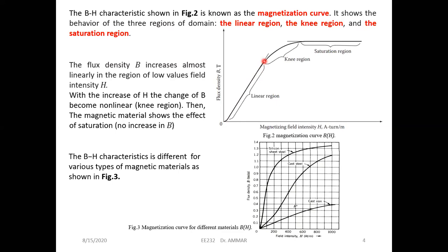In region two, the domains start to be aligned in one direction, so the variation is no longer linear — it is non-linear. We call this the knee region. This second region can also be called the non-linear region.